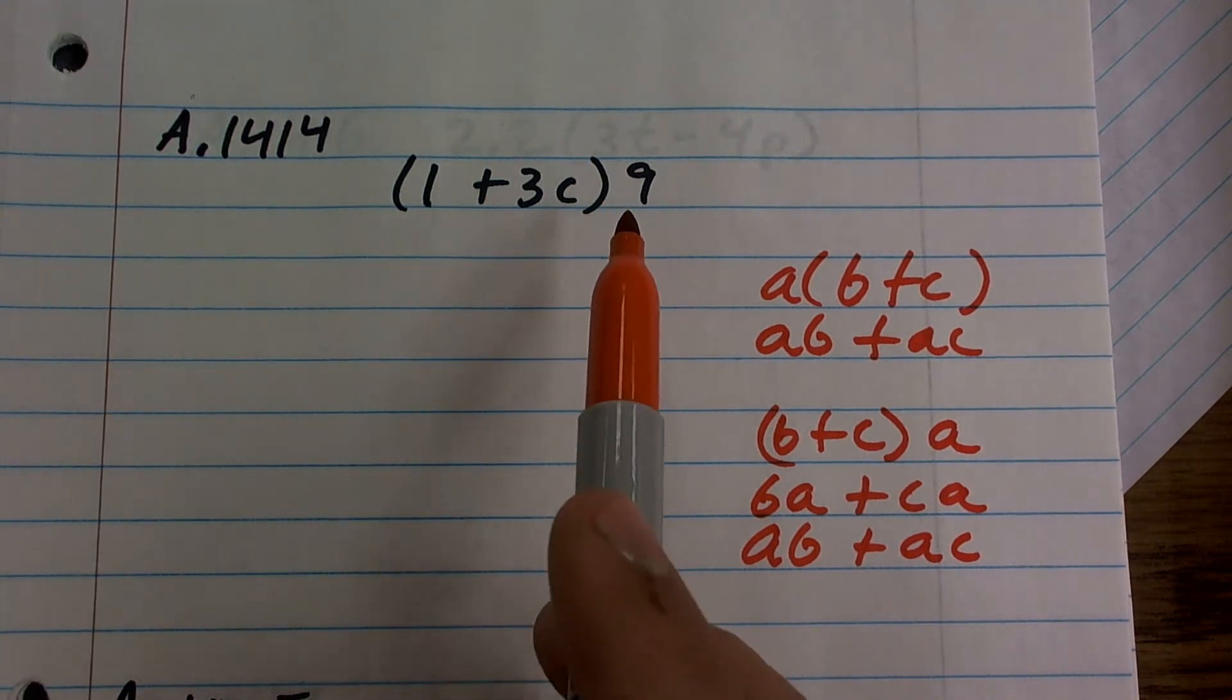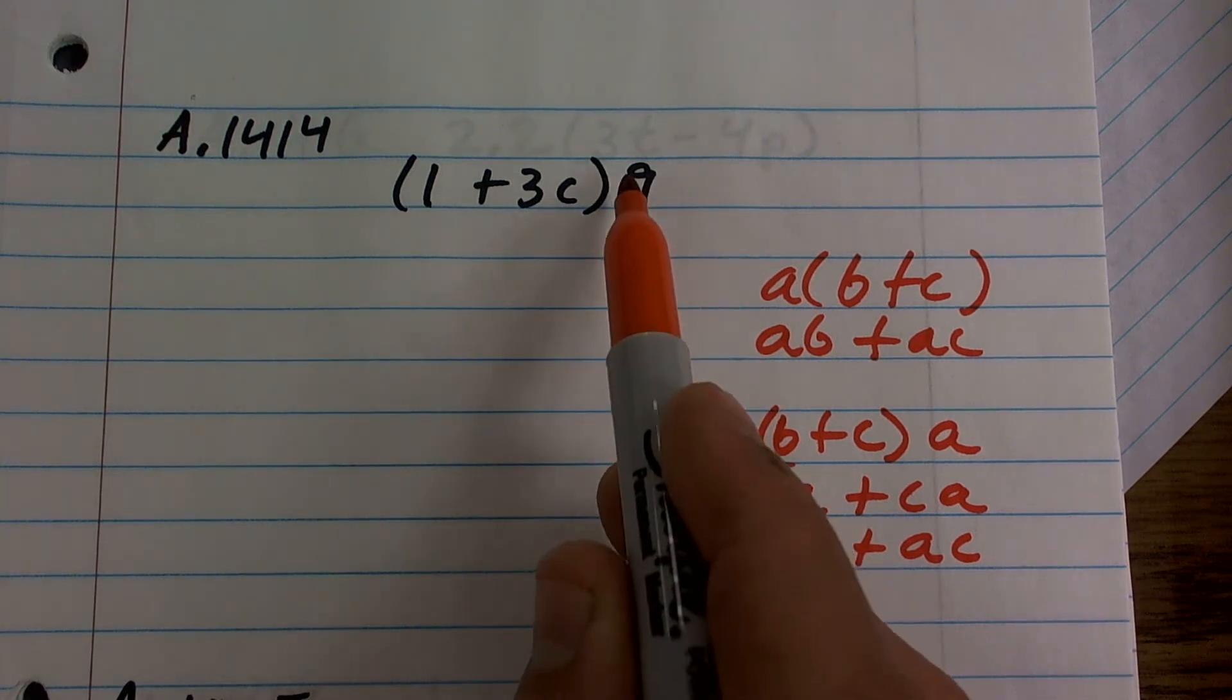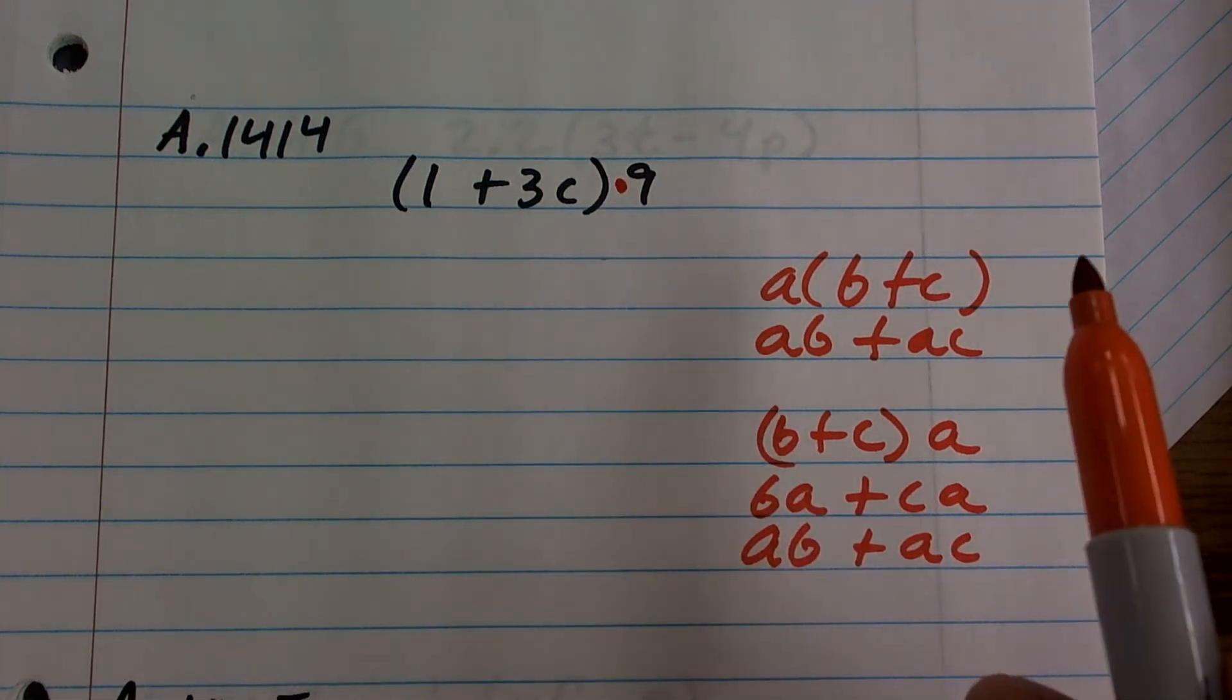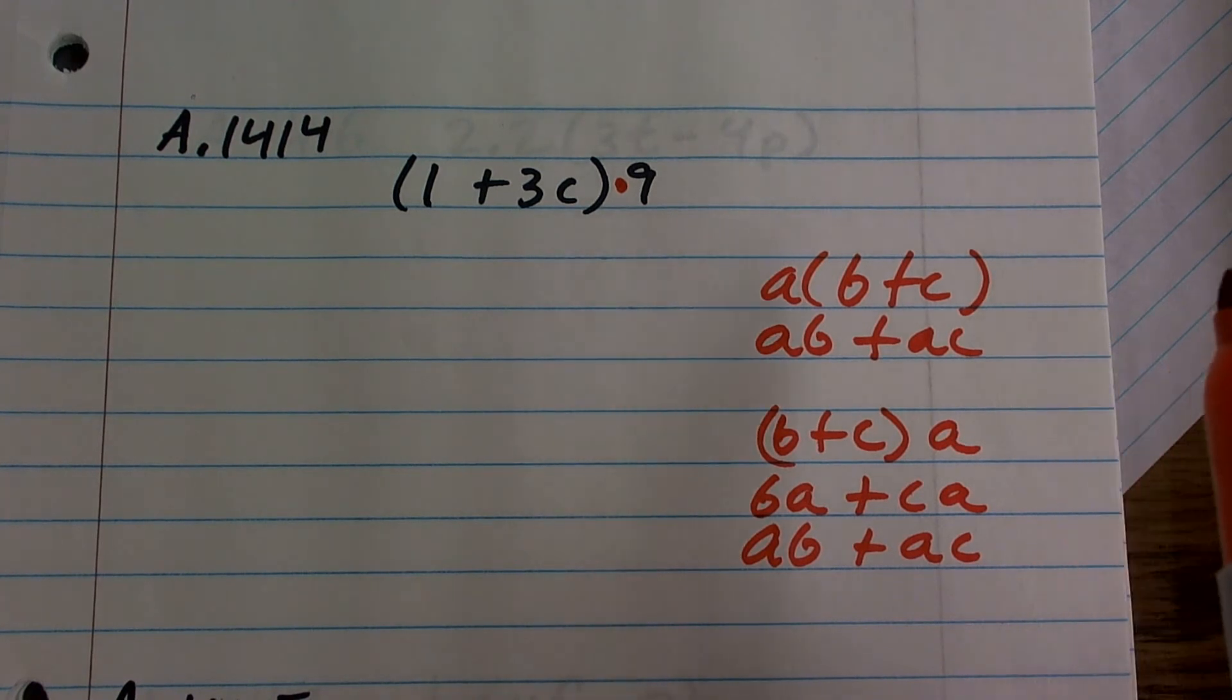So here, and just remember, think about you having your number outside. And since there's no operation, we know that there's going to be a multiplication, right? If it was addition, we'd see a plus sign. Subtraction, we'd see a minus sign.